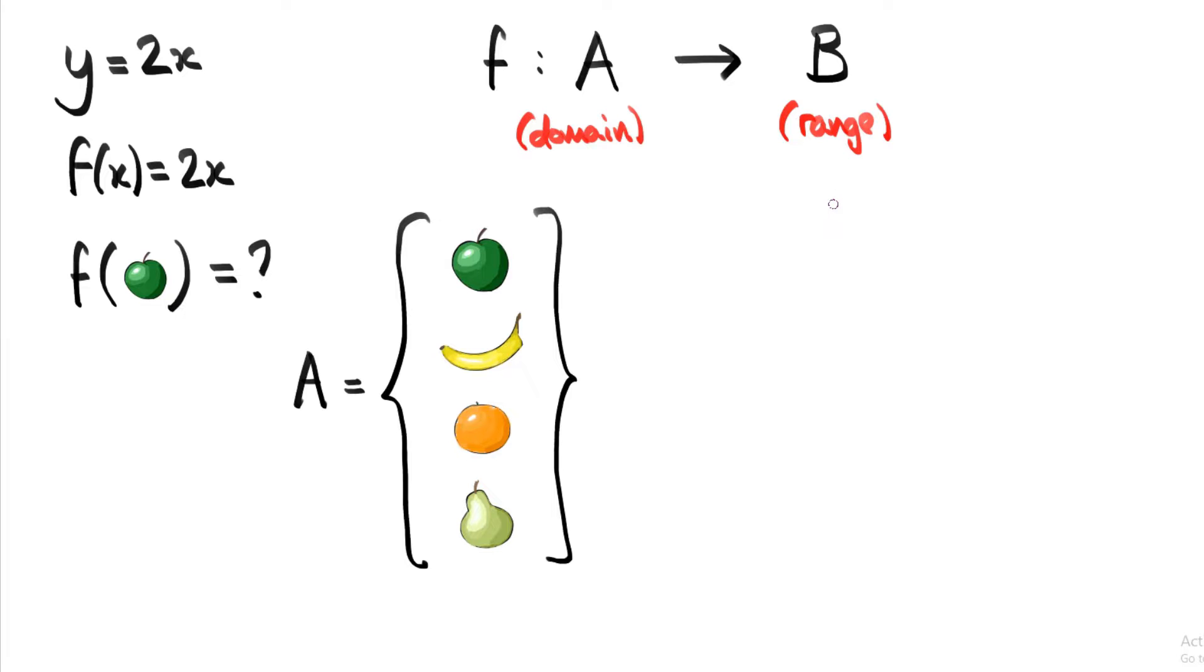Well, one thing we might want to know is the cost of that fruit. So we're going to input into the function the name of a fruit, and the function is going to output how much that fruit costs. Let's create a set B that contains a range of possible prices. Say B is the set that contains 20p, 40p, 60p, 80p, and a pound.